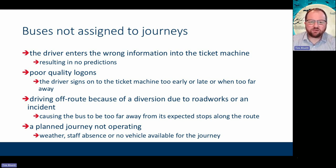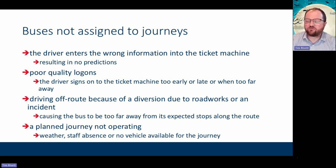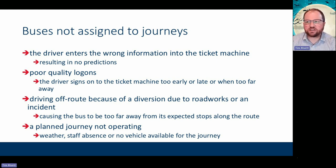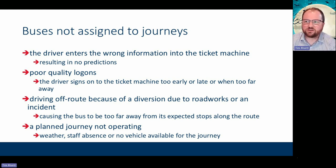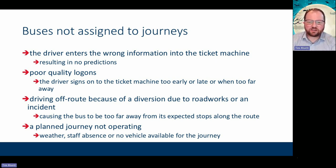Real-time systems work by identifying where the bus is against where it should be. If it sees the bus is too far off for too long, it will drop a prediction and revert to scheduled times on signs and apps. So even if the bus is going to pass the stop, the customer will see the prediction drop and assume something has gone wrong.